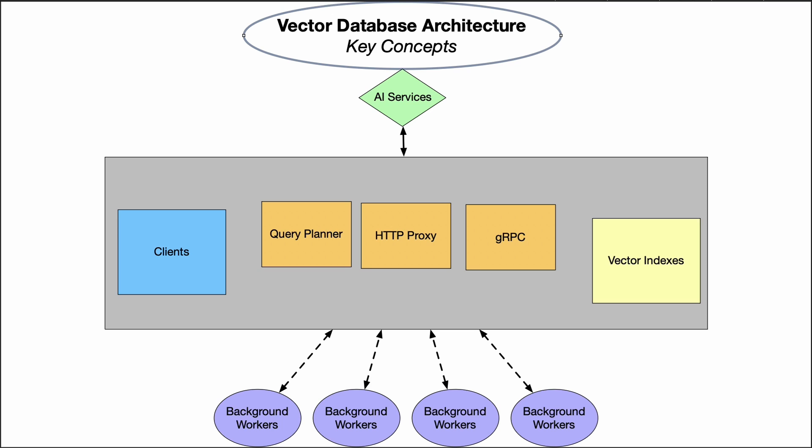When a search request comes in, the gRPC service employs a query planner to optimize and dispatch the search across all relevant vector indexes and data shards. The vector indexes are where the magic happens — this allows ultra-fast similarity search using algorithms like HNSW or PQ.